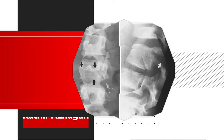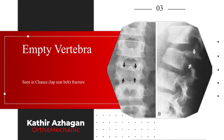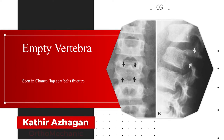Antivertebra sign is seen in chance fracture, also called seat belt injury. The horizontal fracture through both the pedicle and transverse process produces a horizontal lucent defect that is projected over the body of the involved vertebra.